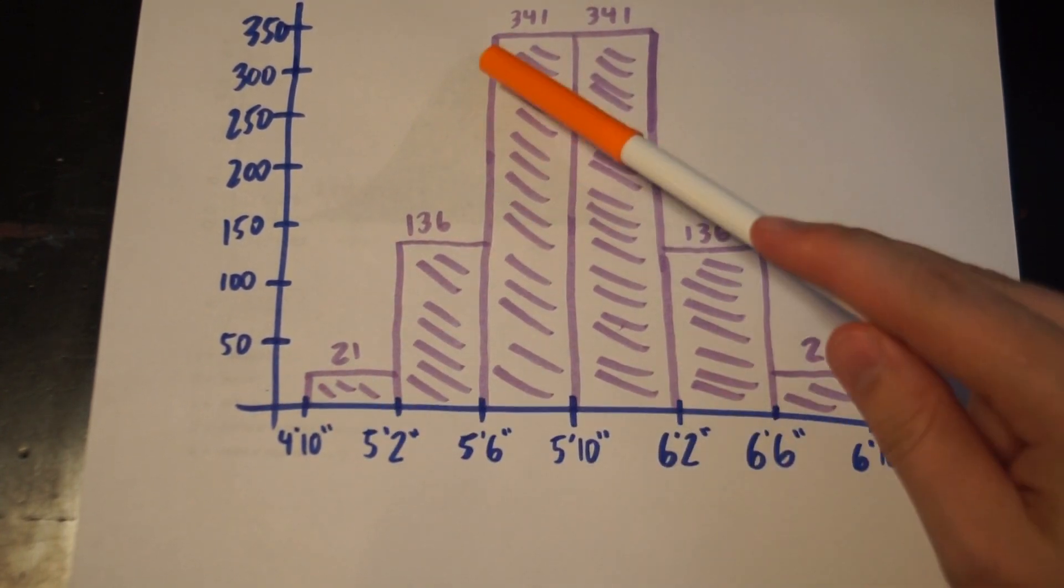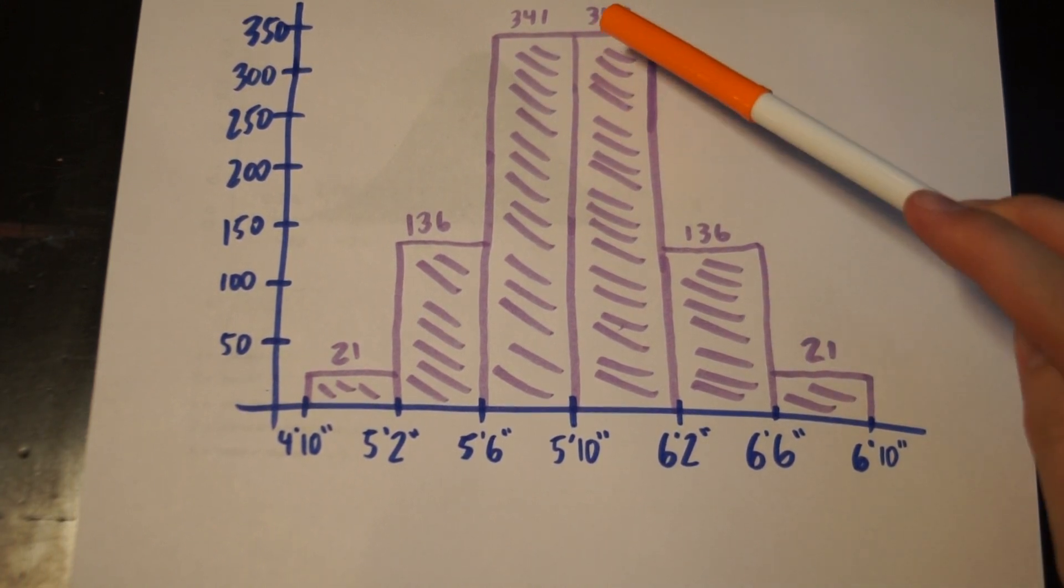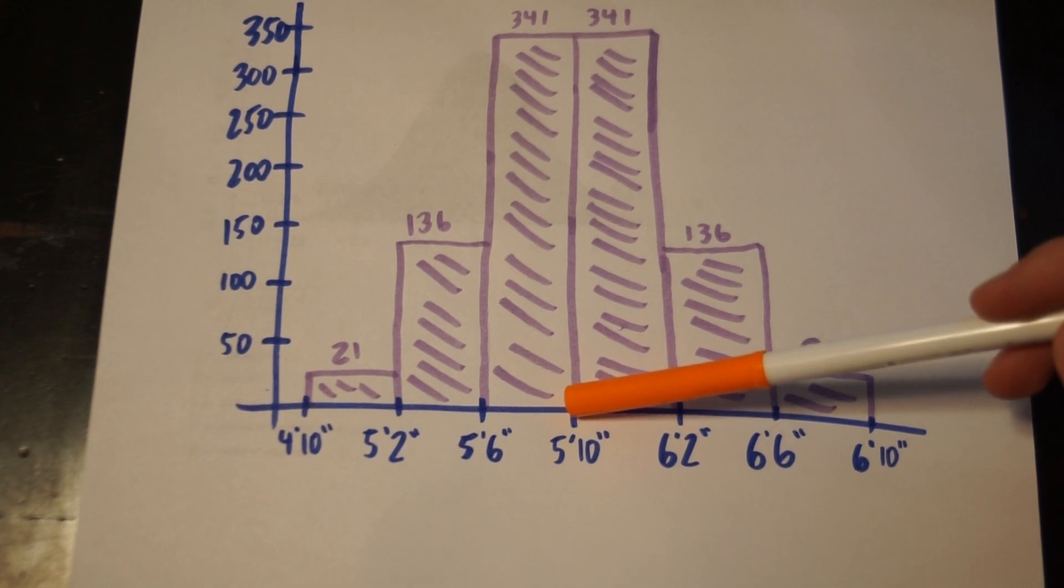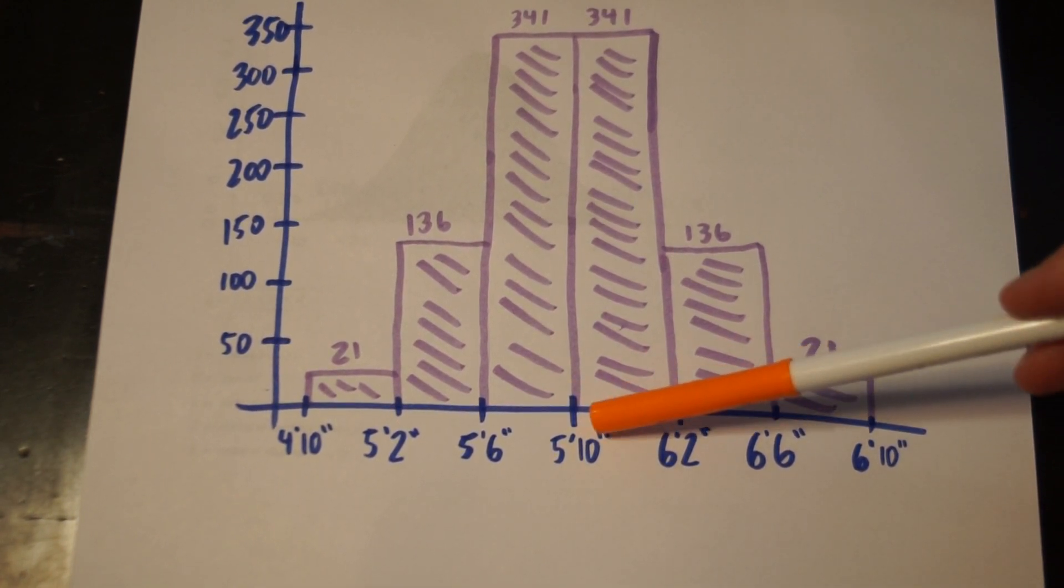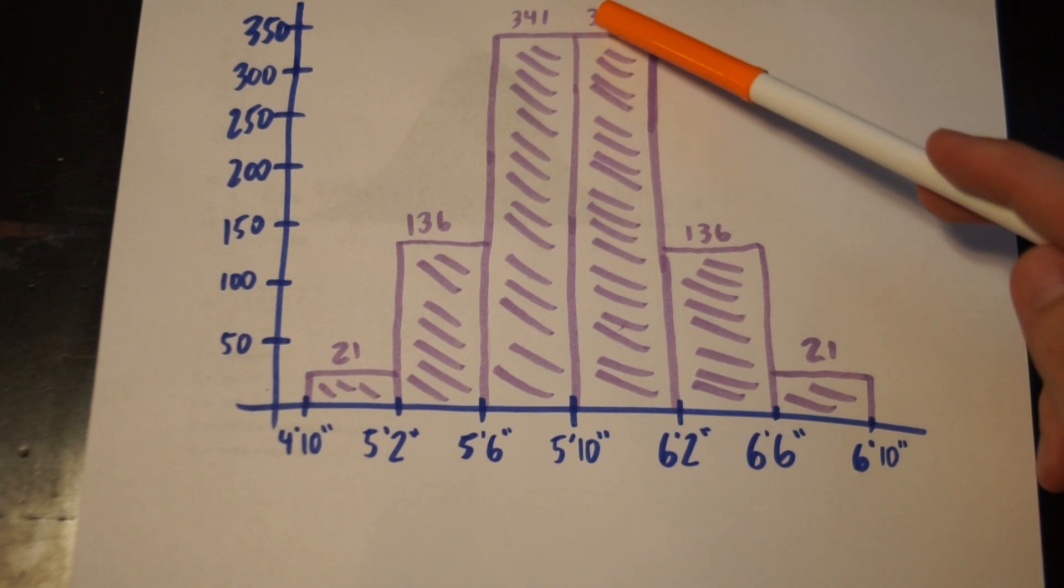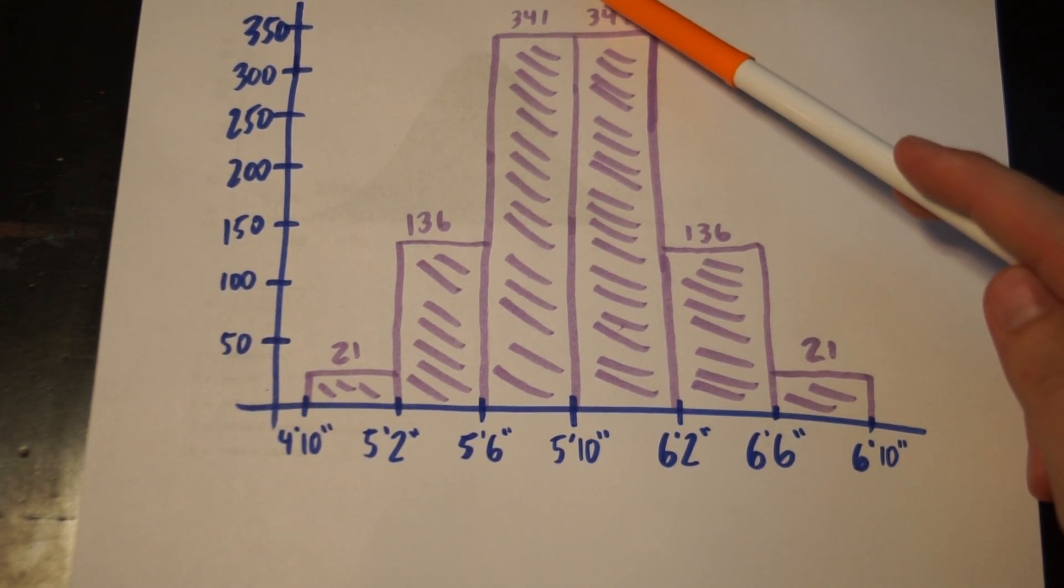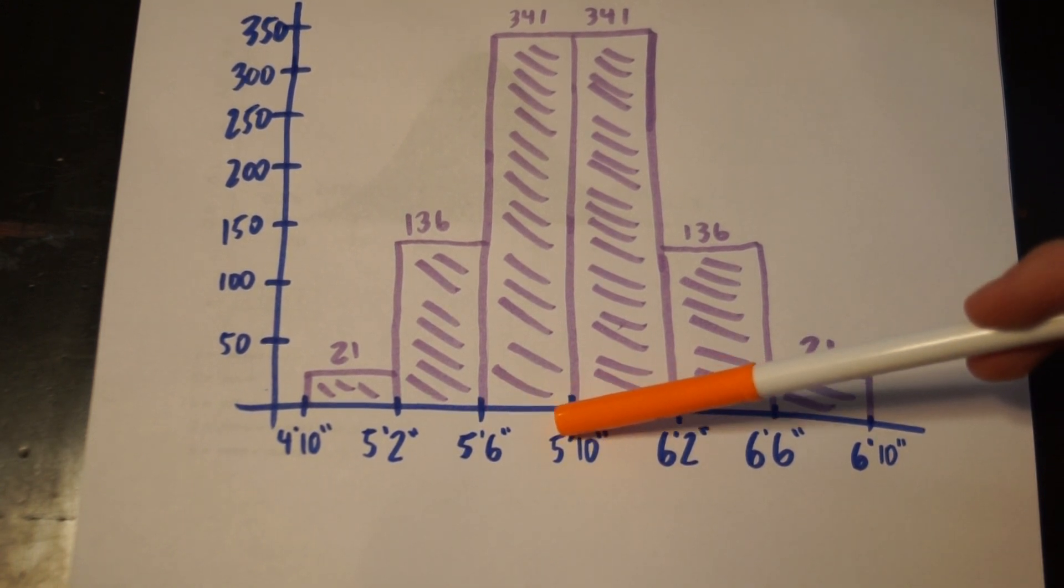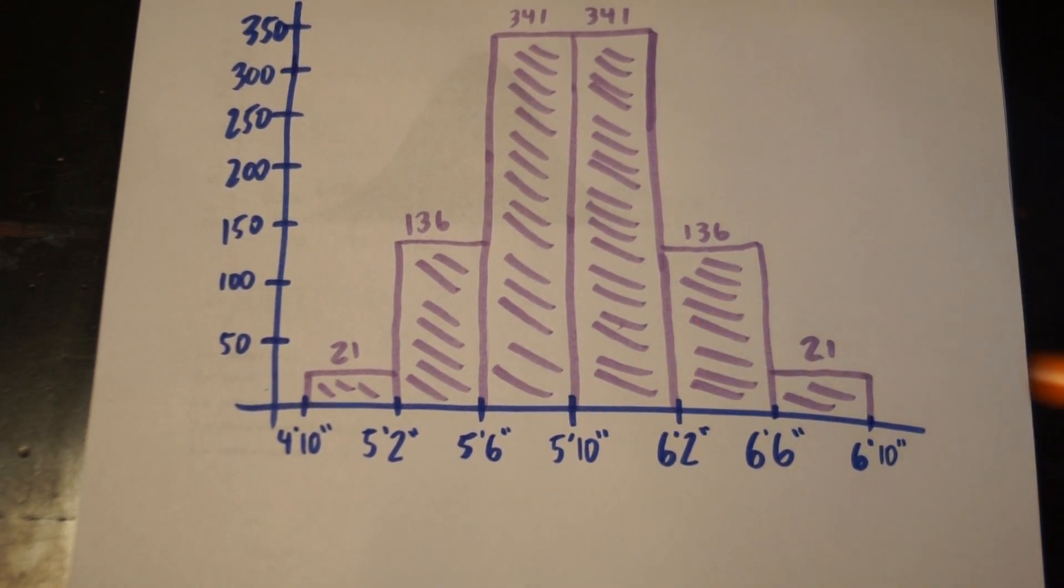You'll notice that it's symmetric, and I remember histograms, they total the number of people in a certain range. So in between 5'10" and 6'2", there are 341 people. Same for in between 5'6" and 5'10". Now generally speaking, whenever we have a symmetric histogram like this, we can hope that it's what we call normal or normal distribution.